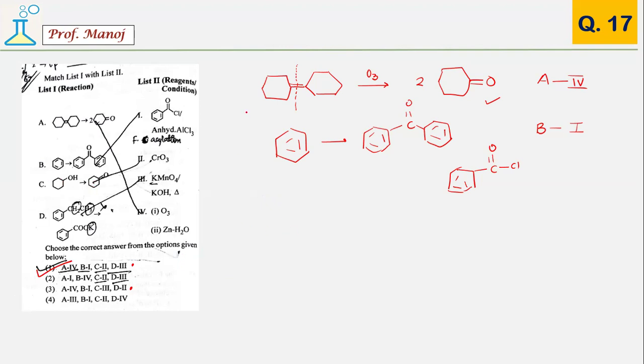Sorry, I wrote by mistake phenol. They have given cyclohexanol which is converted into cyclohexanone. For this, you need a reagent which is an oxidizing agent. They have given CrO3. So C comes out to be 2. The correct answer over here is 1.